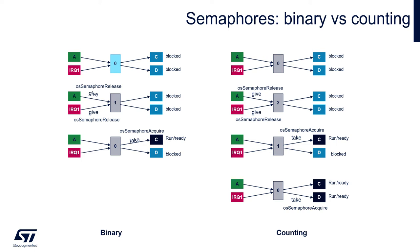On the right side of the screen we can see an illustration of how counting semaphores work. Task A and interrupt IRQ1 both give the semaphore at roughly the same time, and we can see that the internal counter of the semaphore increases to two. The maximum number for the counting semaphore is specified during its creation, defining how many times it can be given and taken.